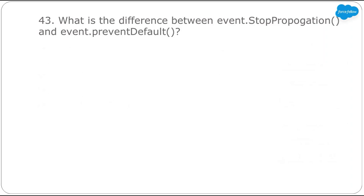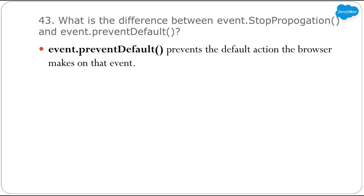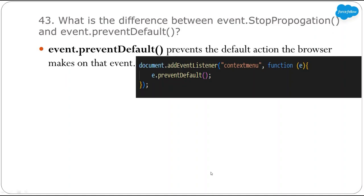Next: what is the difference between event.stopPropagation() and event.preventDefault()? event.preventDefault() prevents the default action of the browser on the event. For example, this code restricts mouse right-click behavior — after adding this code, right-clicking won't show any context menu. I created a contextmenu event handler, and inside it I wrote e.preventDefault(), which prevents the default behavior of the right click so the context menu won't open.